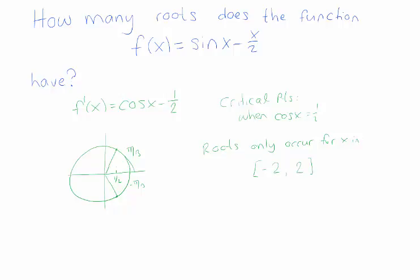If x is bigger than 2, then we have sin(x) minus something bigger than 1, which is negative — not zero. If x is less than −2, then −x/2 is greater than 1, so the function is positive — also not zero. So we can restrict our search to between −2 and 2. Now, π/3 is a little more than 1 and −π/3 is a little less than 1, so both critical points lie within [−2, 2]. Adding 2π to either knocks them outside that range, so within [−2, 2] there are only two critical points.